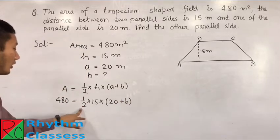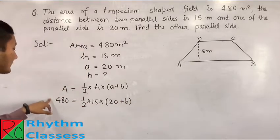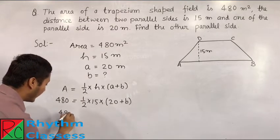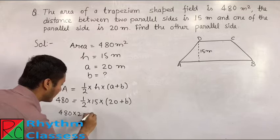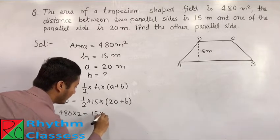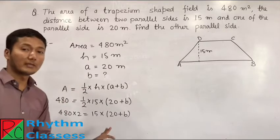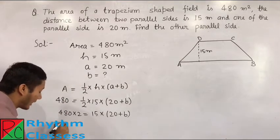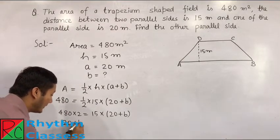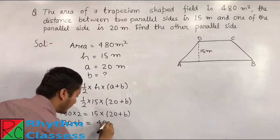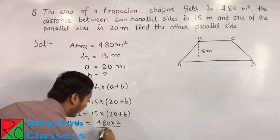From here, if you solve this, then this 2 is transported to here. Then it becomes 480 into 2 equals to 15 into 20 plus B. From here, if you solve this further, it becomes 20 plus B equals to 480 into 2 upon 15.